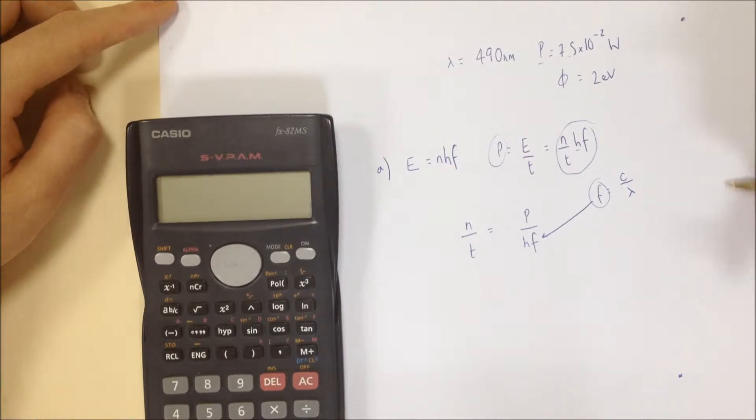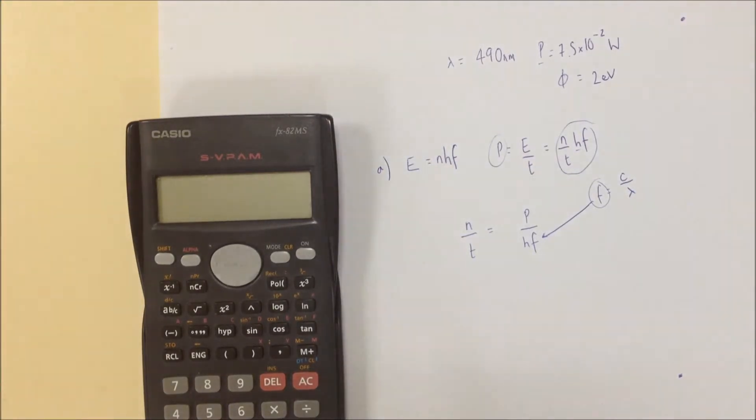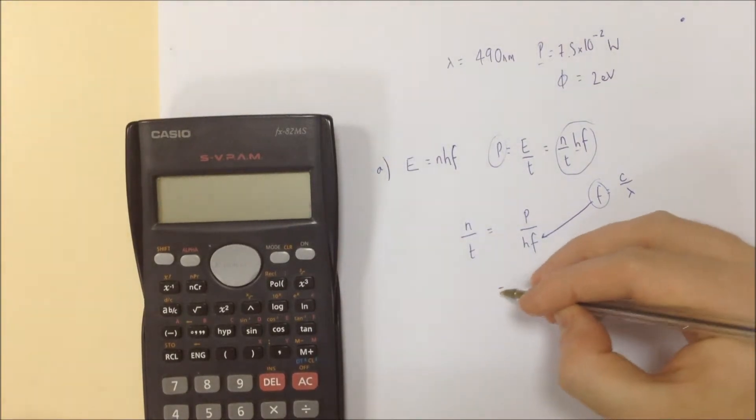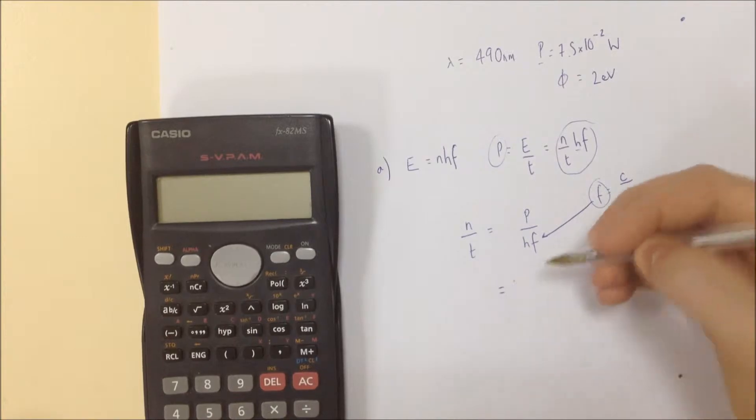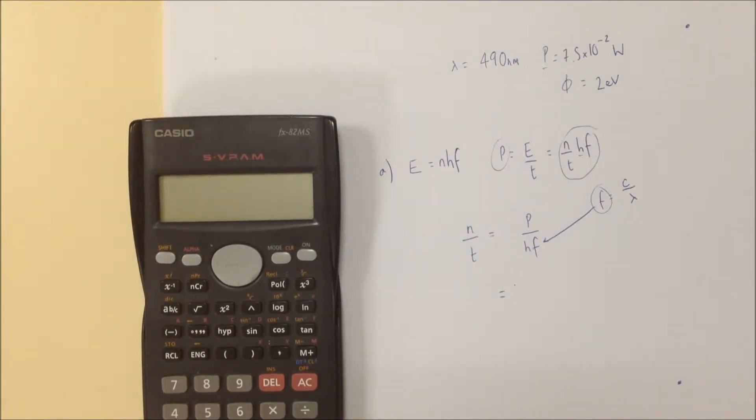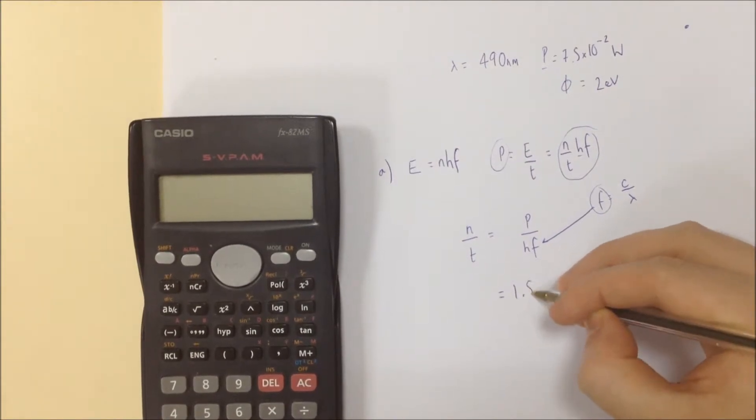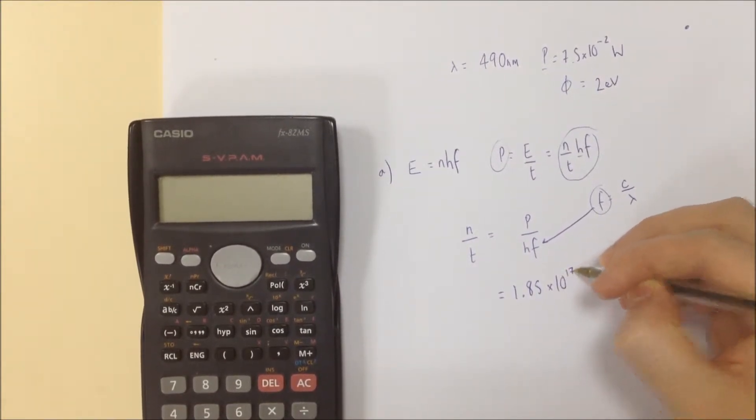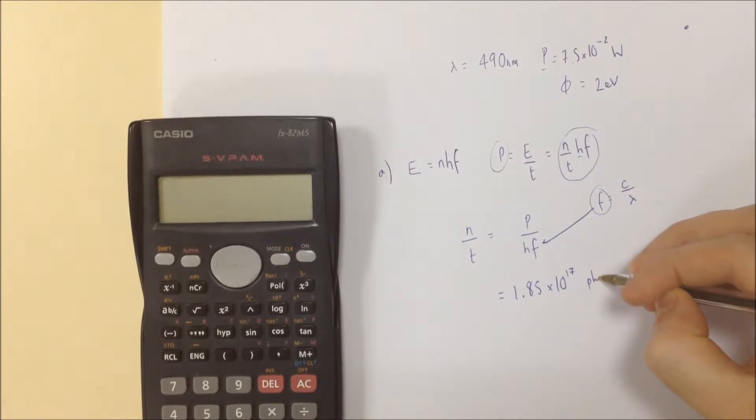which I don't have. But I have right here next to me. It was 1.66 times 10 to the minus 19. Is that right? No, that's not right at all. It was 1.85 times 10 to the 17. 1.85 times 10 to the 17. Photons per second.